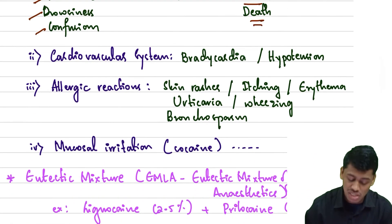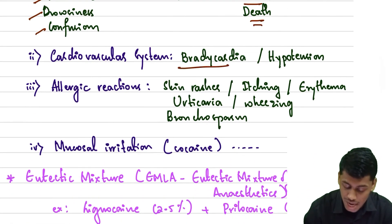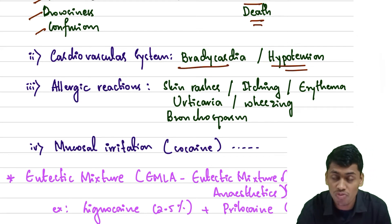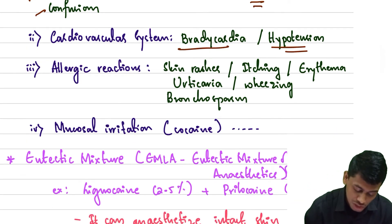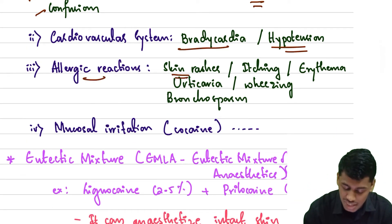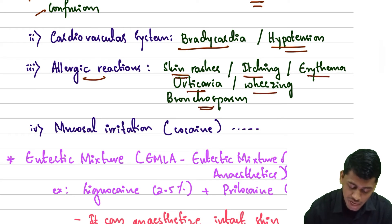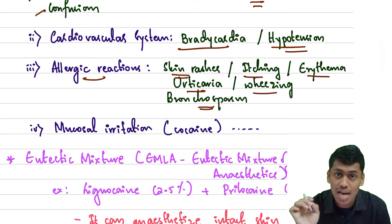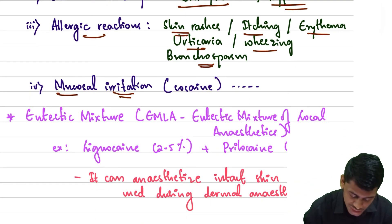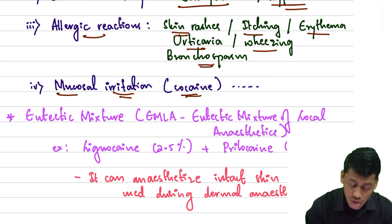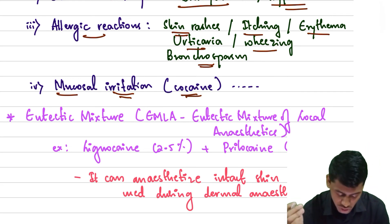On the cardiovascular system, local anesthetics cause bradycardia and hypotension. They may also cause allergic reactions such as skin rashes, itching, erythema, urticaria, wheezing, and bronchospasm. They can also cause mucosal irritation, such as with cocaine.